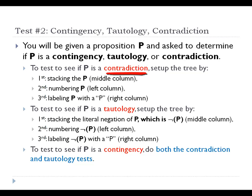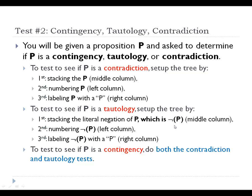To test for contradiction, you simply set up the tree by writing the proposition on a line, numbering that proposition, and labeling it with a P in the right-hand column to indicate this is the proposition you're going to test. To test to see if a proposition is a tautology, you need to do something special: you need to negate the entire proposition. On the first line, you'll write the literal negation of that proposition. So if we're going to test whether, say, C and P is a tautology, we write parentheses around it and put the negation sign to negate the entire proposition. Then number it and label it with a P.